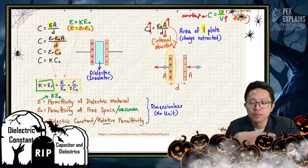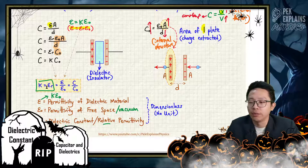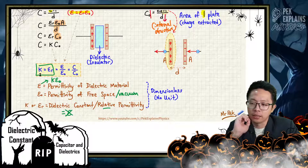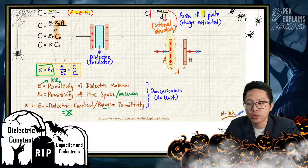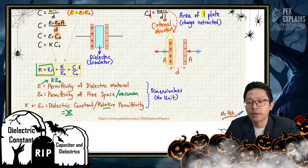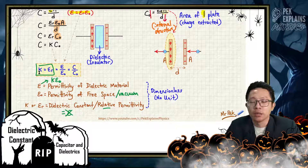This forms the definition of dielectric constant — also the definition of relative permittivity. The dielectric constant or relative permittivity means the ratio between permittivity of dielectric material over permittivity of free space, or the ratio of capacitance with dielectric over capacitance without dielectric.